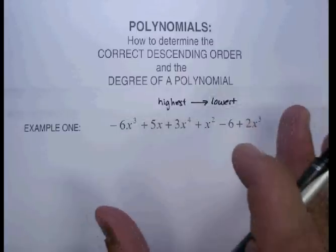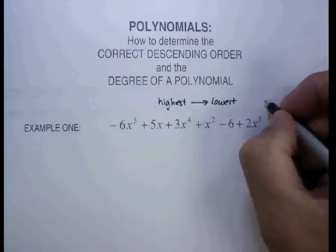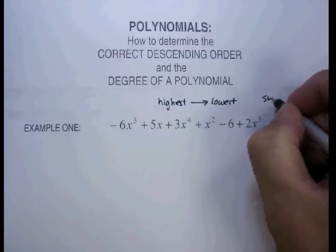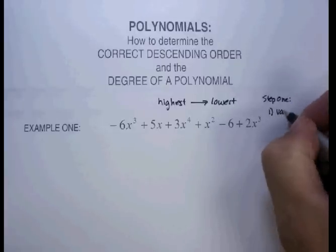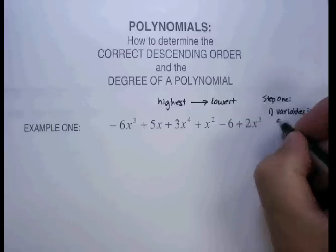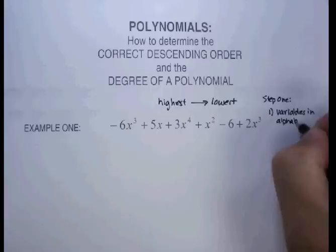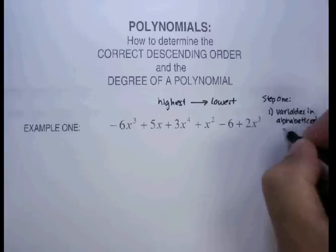Now, what do I look for to determine that? Well, the first thing is basically it's a two-step process. So step one, look for the variables and place the variables in alphabetical order.